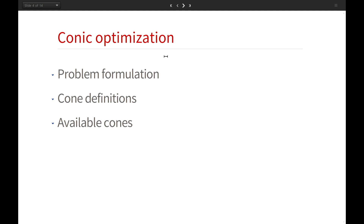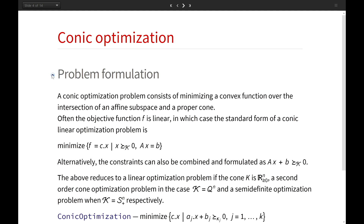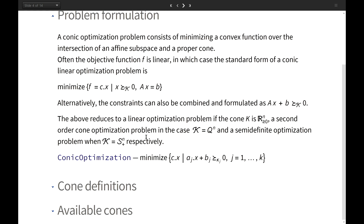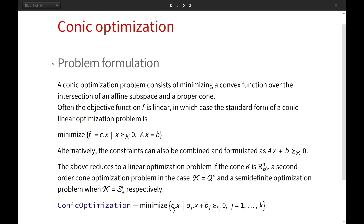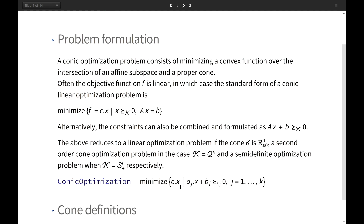To solve convex optimization problems efficiently, we want to transform them first into a conic optimization form. This form looks somewhat like linear optimization, but here instead of linear inequalities we have so-called conic linear inequalities. So if we can model a convex function in this form, it can be solved with methods similar to linear optimization and therefore solved efficiently.